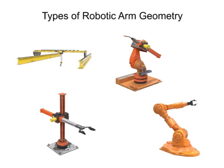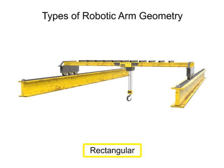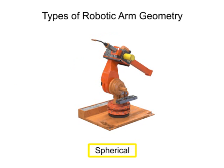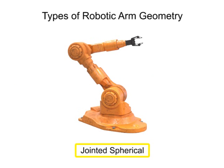There are four main types of robotic arm geometry: rectangular, cylindrical, spherical, and jointed spherical.